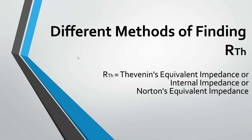Hello everyone. In this video we are going to see different methods of finding RTH. So what is RTH? RTH is Thevenin's Equivalent Impedance or Norton's Equivalent Impedance, and it is also known as Internal Impedance.